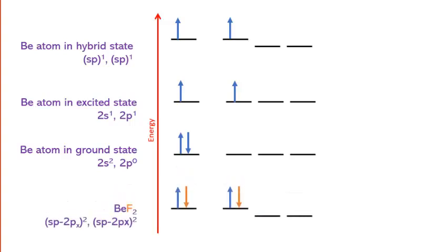Finally, when the BeF bonds form, the system reaches a lower energy state compared to the excited or the ground state. This lowering of energy upon bond formation contributes to the stability of the molecule. And we can see how hybridization gives more stability in terms of energy than just considering the overlap of the orbitals in excited state.